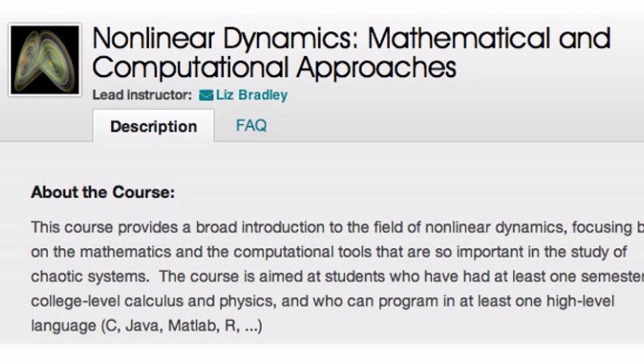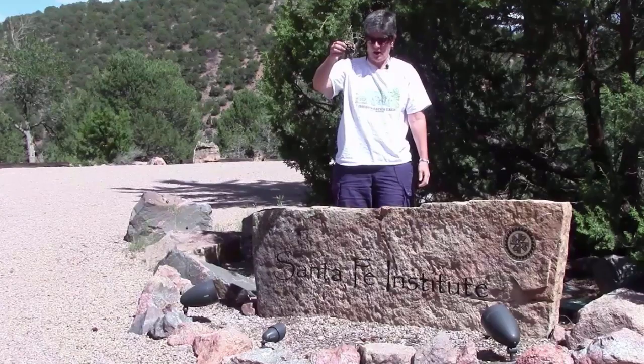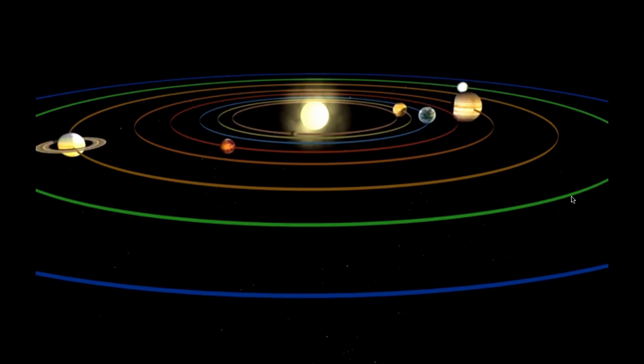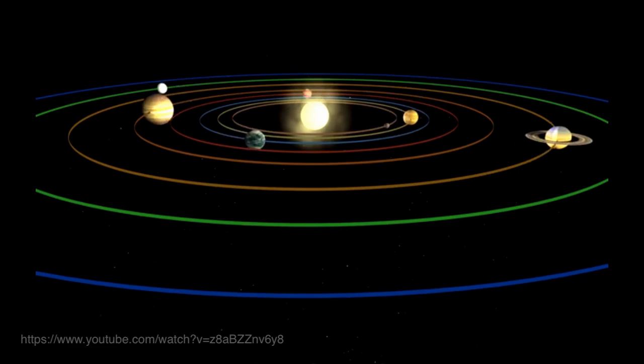If you want to understand the world — how the world works — or if you want to design things that fit into the world, you need to understand nonlinear dynamics. Dynamics is the mathematics of evolution: how things move, how they change, how they grow. That ranges from how something falls, to how an airplane takes off, to how planets move through the solar system. Most of the mathematics that people learn in high school and college makes the assumption of linearity.